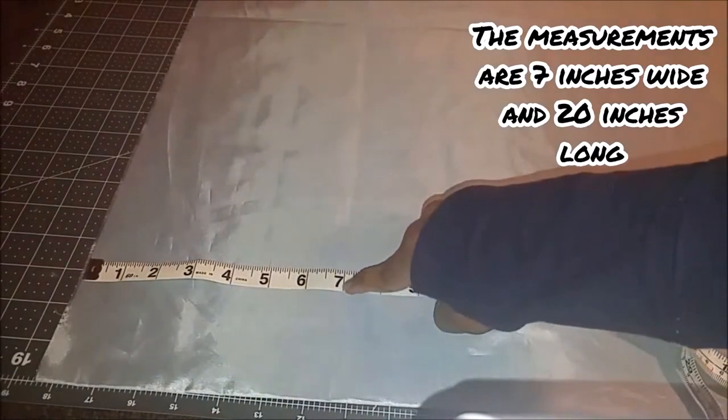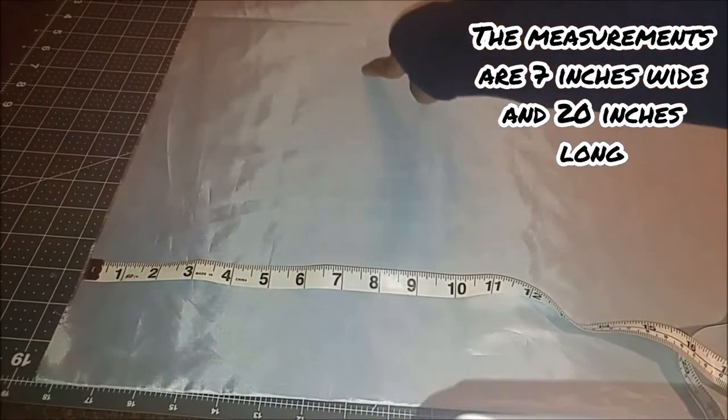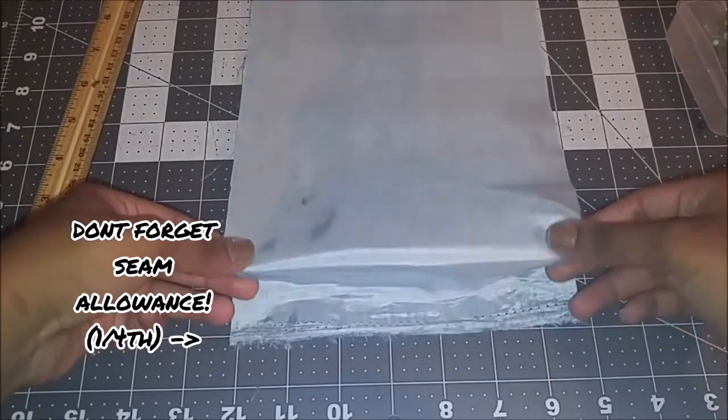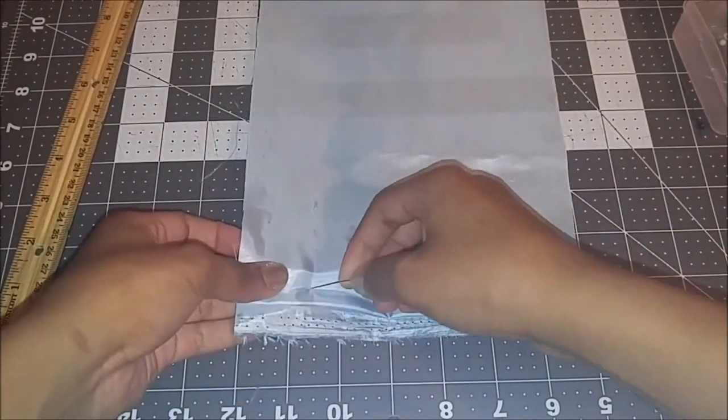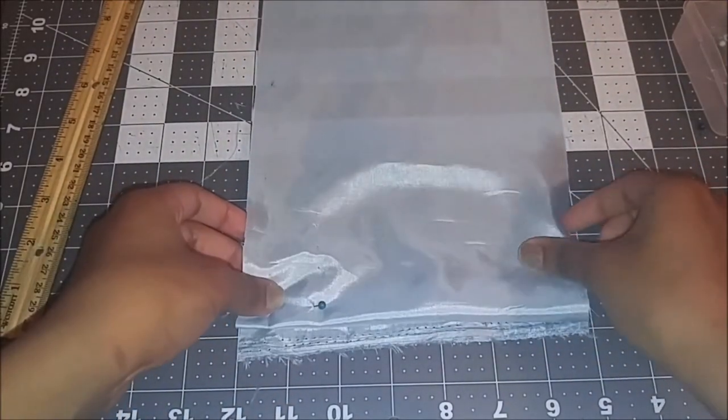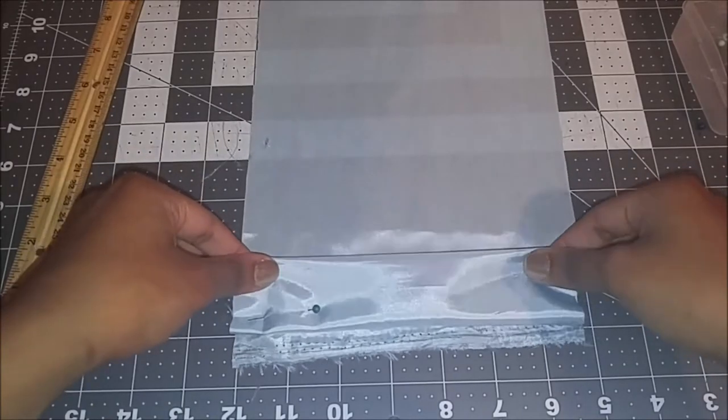Cut out a strip of fabric. You might have to sew 2 strips together. To make the pleats, I just keep folding the fabric over in the same direction, making it as even as I can. Once I'm done, I iron it down so that it stays flat.